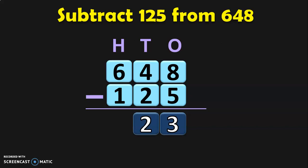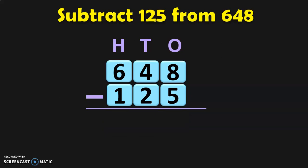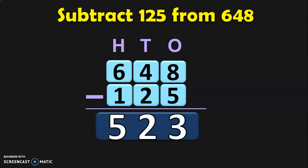Next, in the hundreds place we have six minus one. From the properties of subtraction, we know that when we subtract a number by one, we get the before number. So six minus one gives you five. The answer for subtract 125 from 648 is 523.